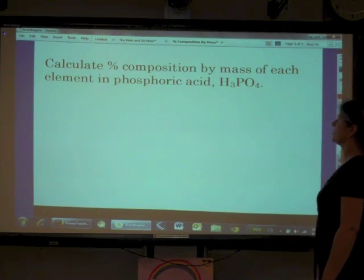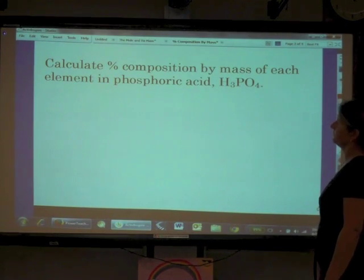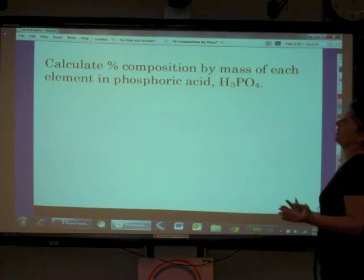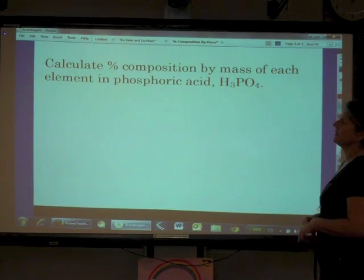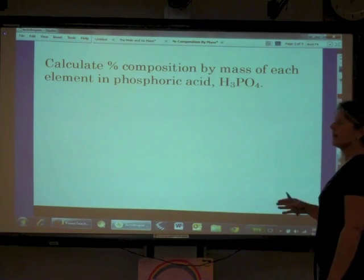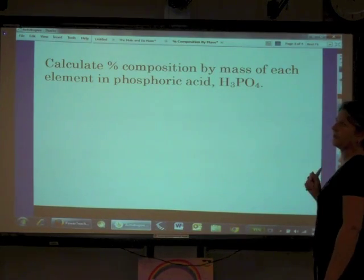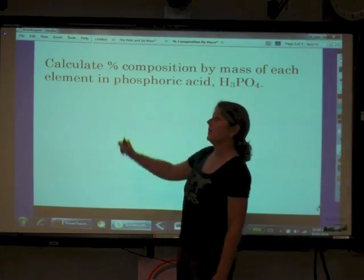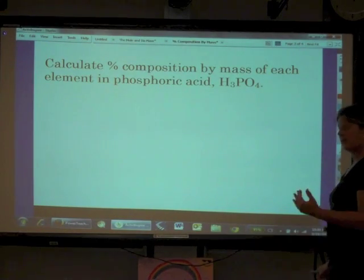Calculate the percent composition by mass of each element in phosphoric acid, H3PO4. Just like any other percentage, to find a percentage of anything, it is the part divided by the whole times 100. And there's nothing different about what we're going to do here. We're finding percentages.